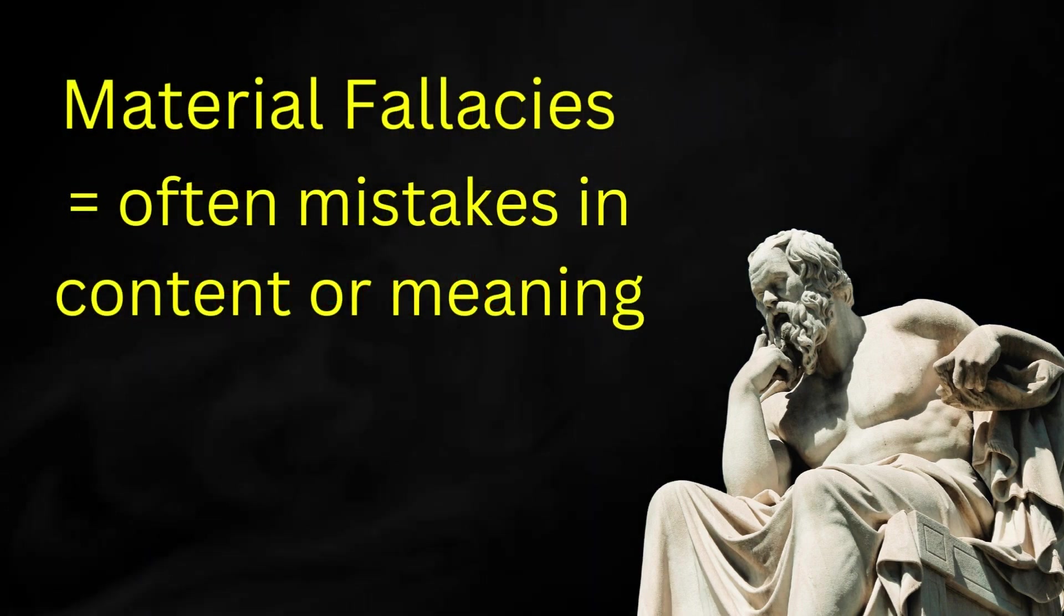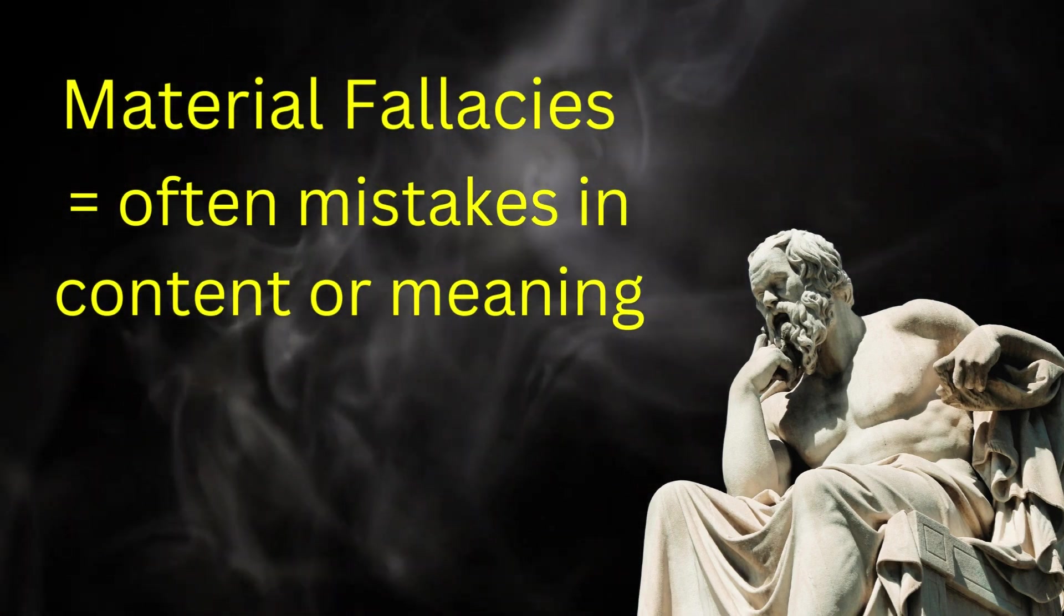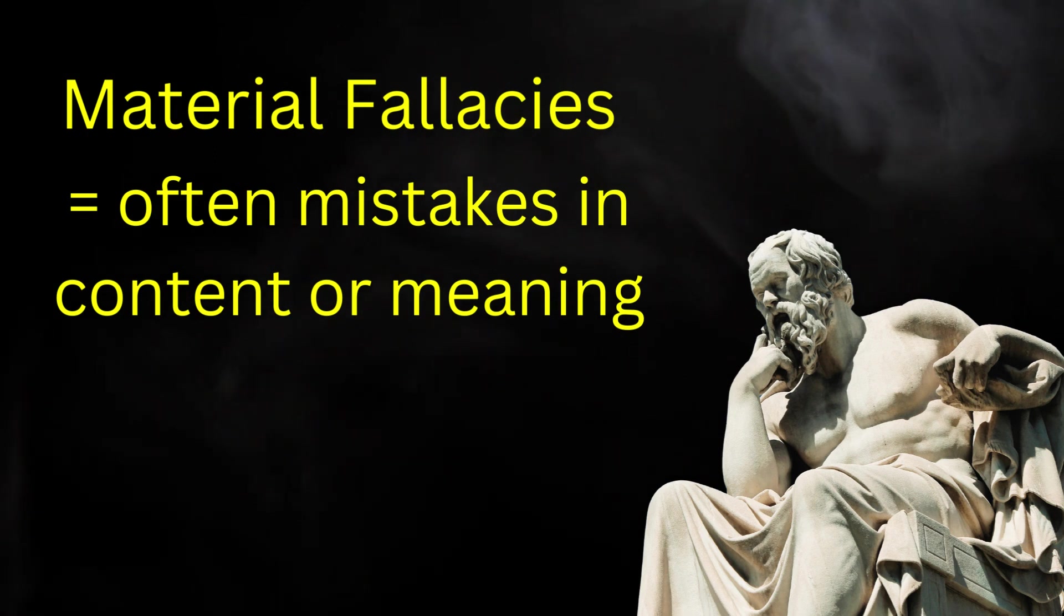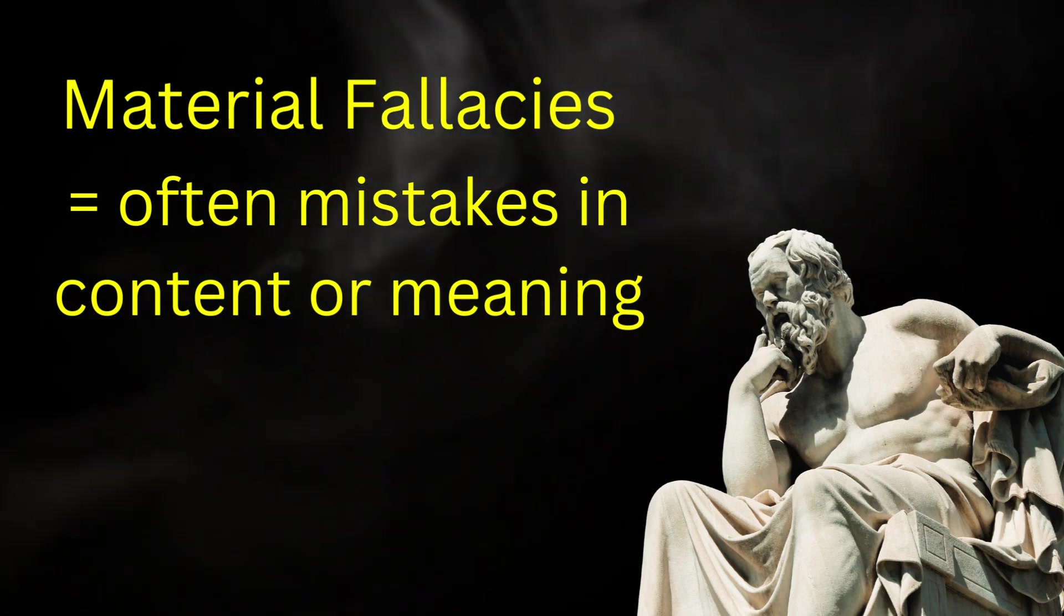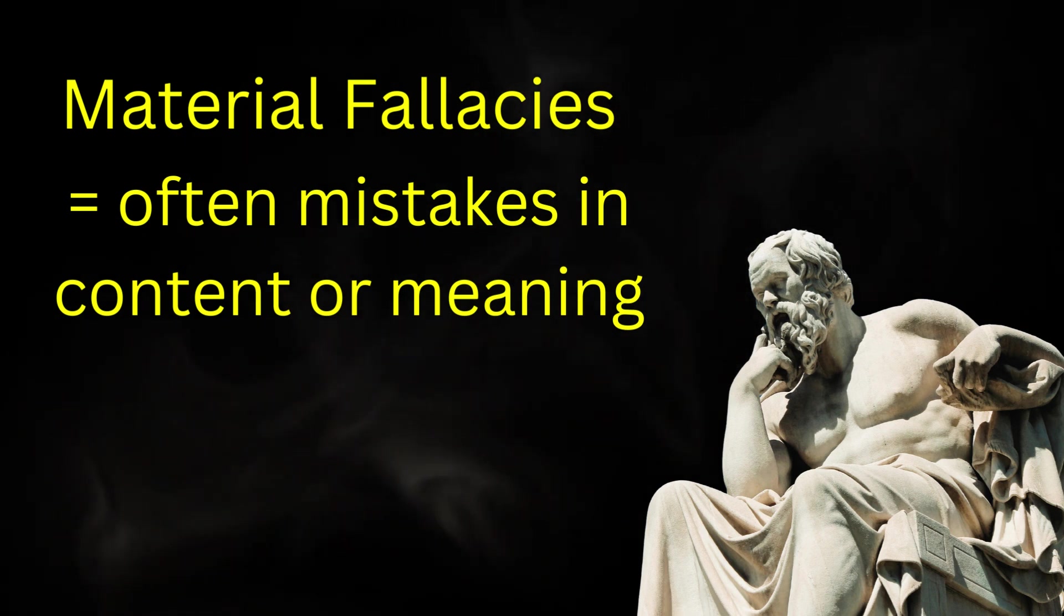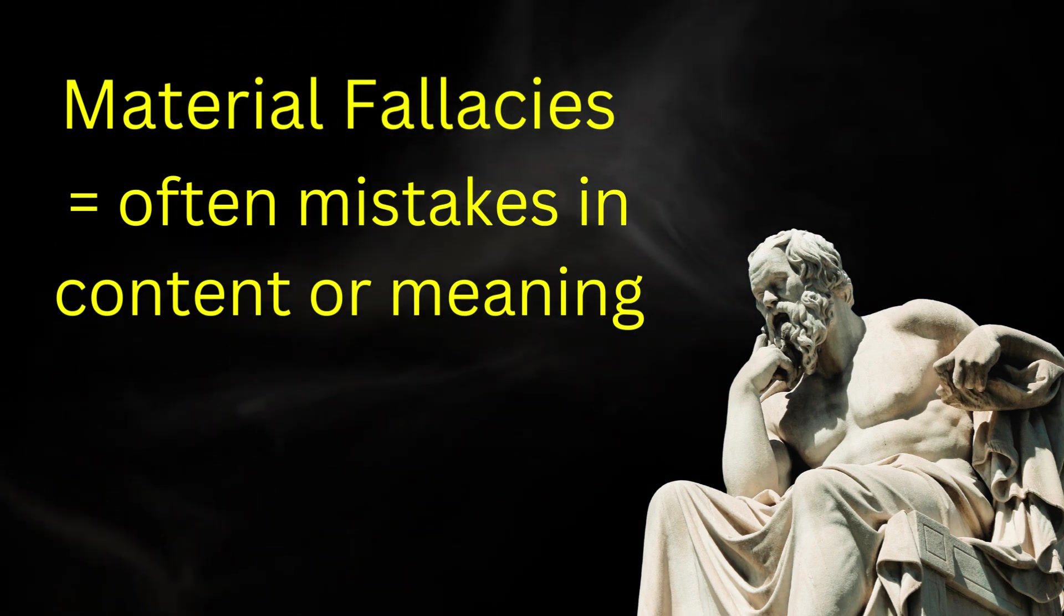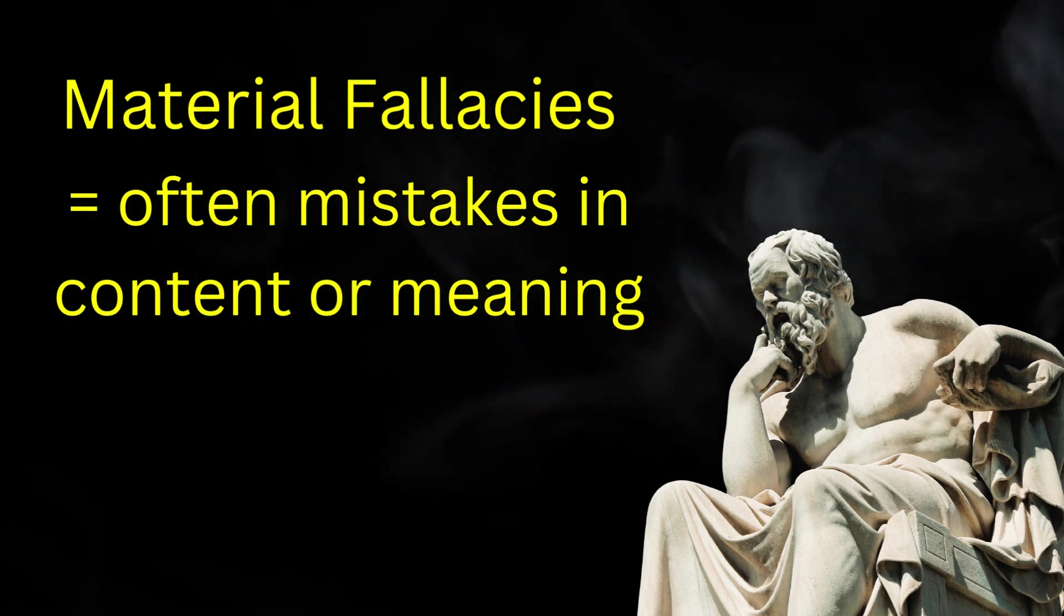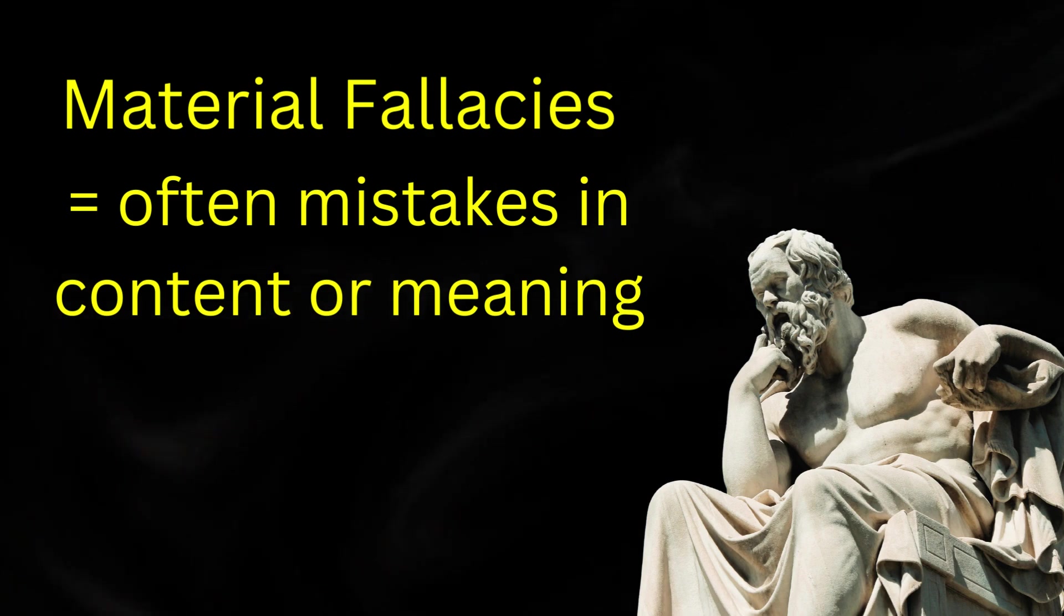Material fallacies, on the other hand, are mistakes in the content or meaning of an argument, and thus more subtle and sometimes more difficult to detect. There are many classifications of material fallacies, including fallacies of language (equivocation, straw man), fallacies of diversion (red herring, tu quoque), fallacies of strategy (non sequitur, begging the question), fallacies of induction (hasty generalization, post hoc ergo propter hoc), and more. Also note that context plays a role in material fallacies to determine whether the fallacy applies. For example, not all parts to whole reasoning is the so-called fallacy of composition. In other words, material fallacies are not as black and white as formal fallacies, and their detection is often as much art as science.